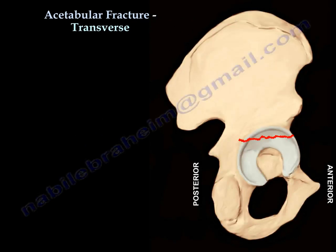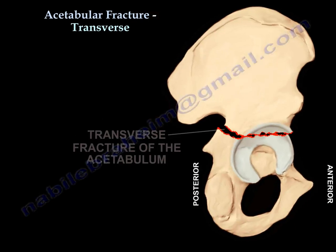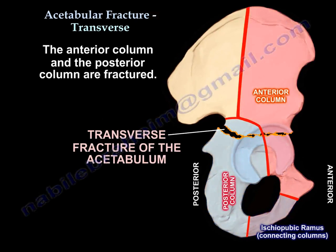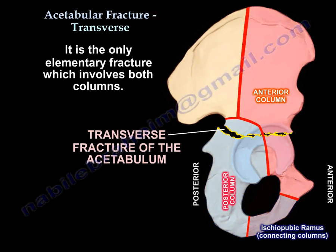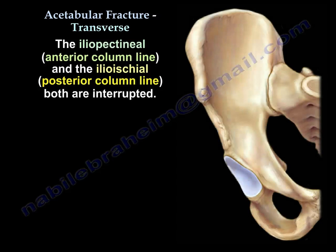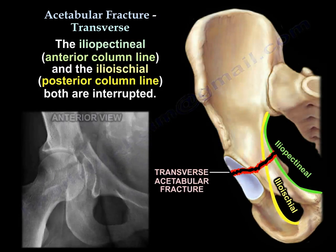In a transverse acetabular fracture, the anterior column and the posterior column are both fractured. It is the only elementary fracture that involves both columns. The iliopectineal line, which is the anterior column line, and the ilioischial line, which is the posterior column line, are both interrupted.